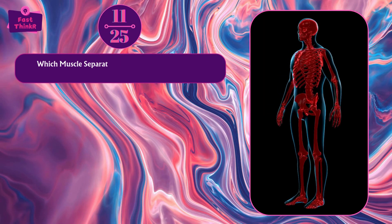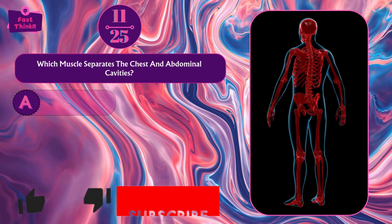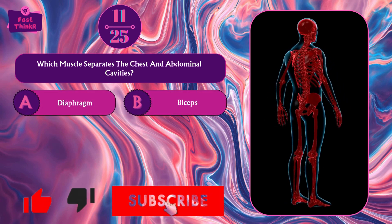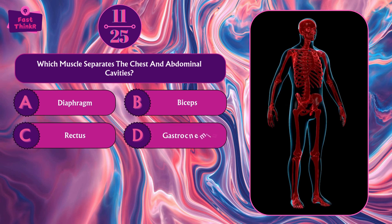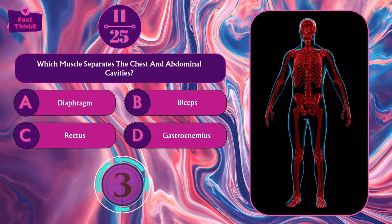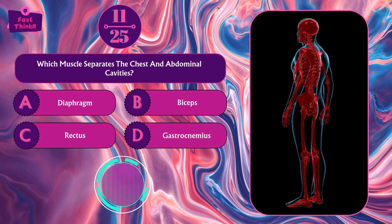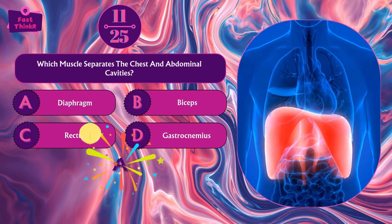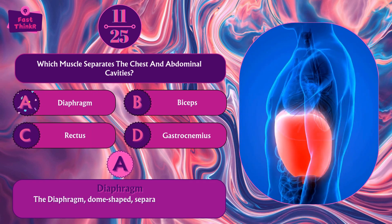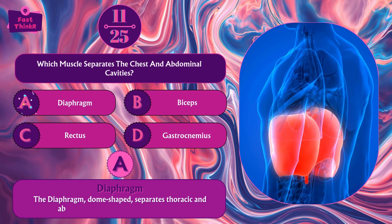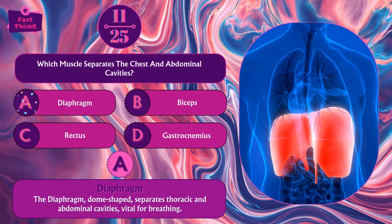Which muscle separates the chest and abdominal cavities? Diaphragm, biceps, rectus, or gastrocnemius? Option A — diaphragm. The diaphragm, dome-shaped, separates the thoracic and abdominal cavities and is vital for breathing.